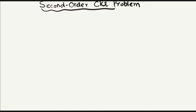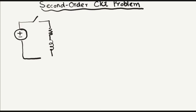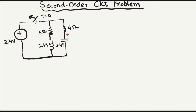Let's go through another example of a second order circuit to find the initial and final values of current and voltage. The circuit has a voltage source, resistor, inductor, another resistor, and a capacitor with a switch. The switch will open at t equals 0, and when t is less than 0, the switch is closed. This is the capacitor voltage and here is the inductor current.